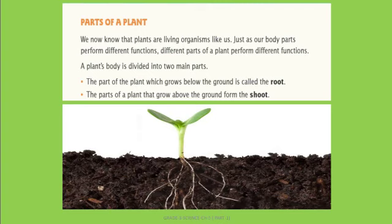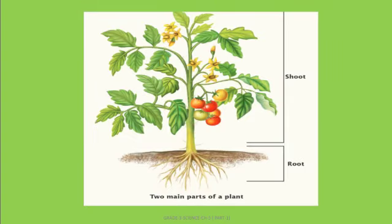So the plant body is mainly divided into two parts: number one is the root and the second one is the shoot. The root is present below the ground and the shoot is present above the ground. Looking at the full picture of a plant, we can see the ground, with root below and shoot above.